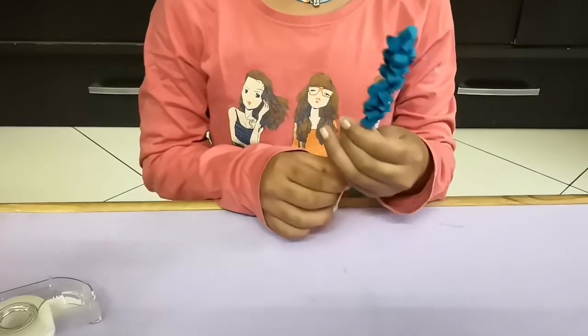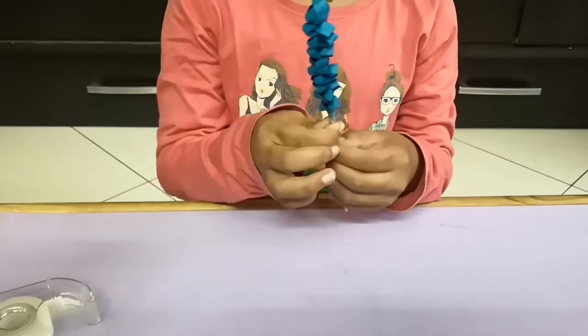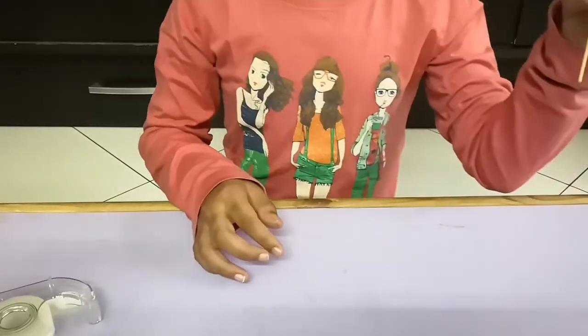Once you are done rolling it, stick the end with tape and then push it up. Our paper flower is ready.